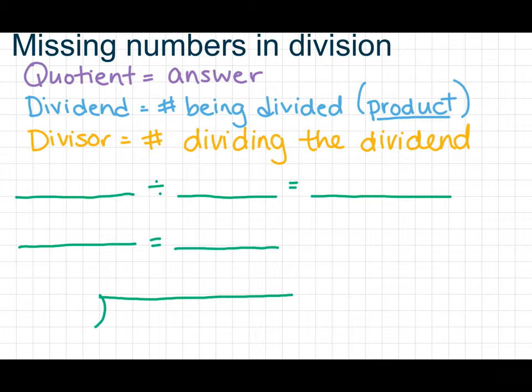We're going to move on to missing numbers in division. And again, I'm just going to go over some basic vocabulary. The quotient is our answer. The dividend is the number that's being divided. And actually, it's really helpful to think about it this way. The dividend in a division problem is also the product of a multiplication problem.